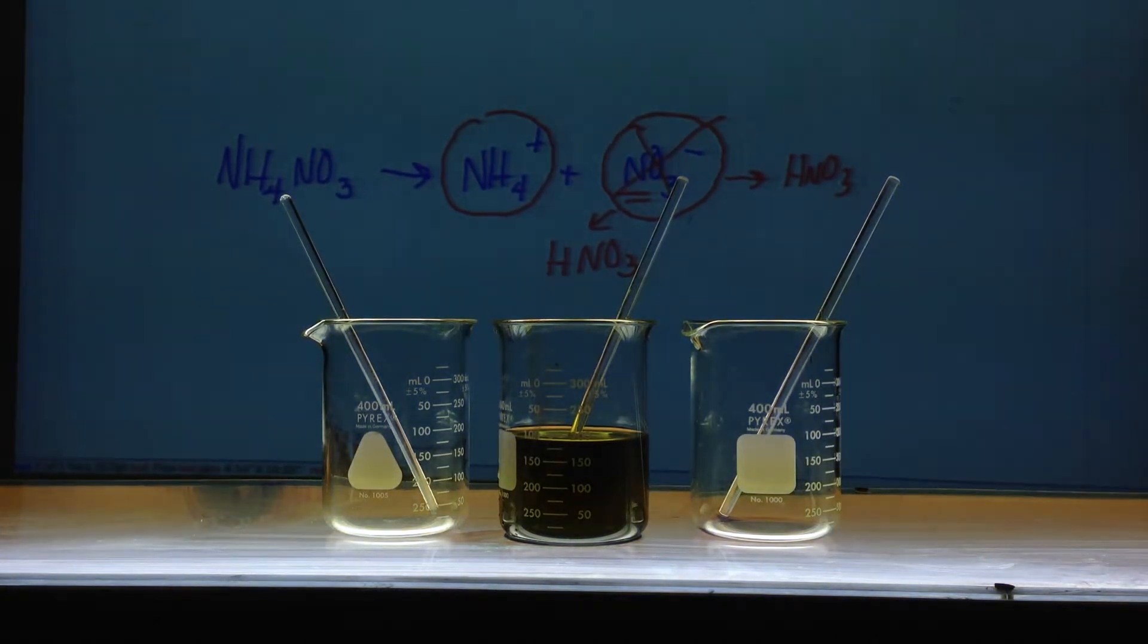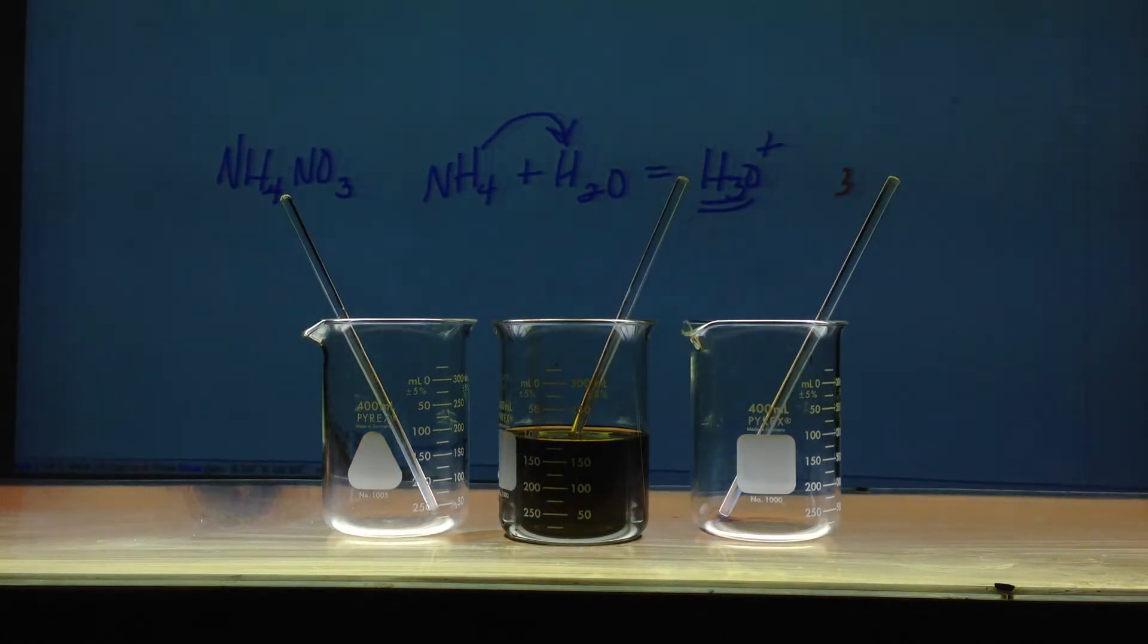Now, NH4, my friends in chemistry, is the conjugate acid of a weak base, NH3. So, NH3 is a weak base, so its conjugate acid is pretty strong. So, NH4+ can give an H to water to make H3O+. So, NH4+ has an ability to ionize water. So, getting rid of all of this, here we go. NH4+ plus water, this can give an H, and we're going to make H3O+, which is acidic. So, let's add some universal indicator to ammonium nitrate.